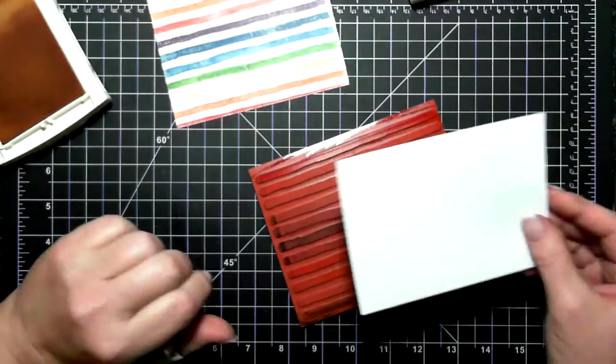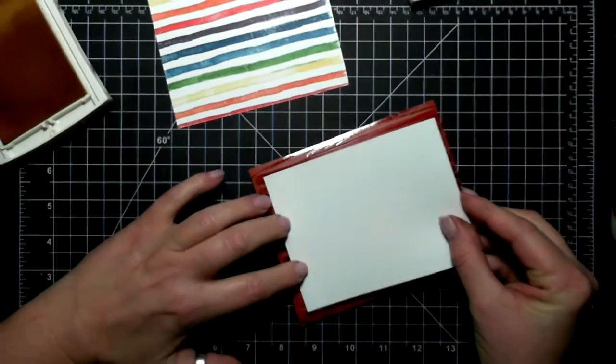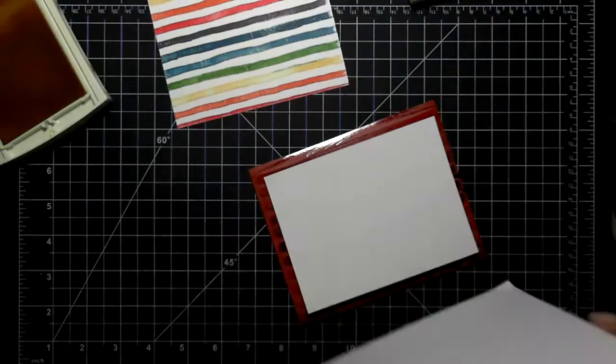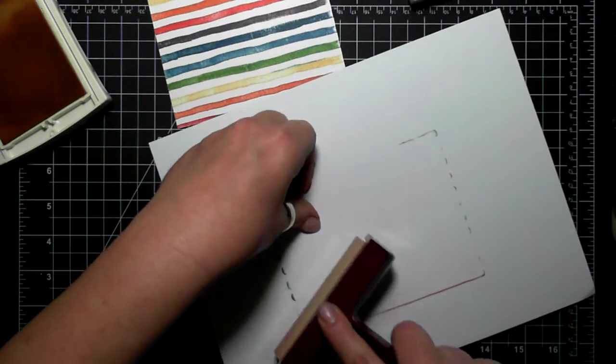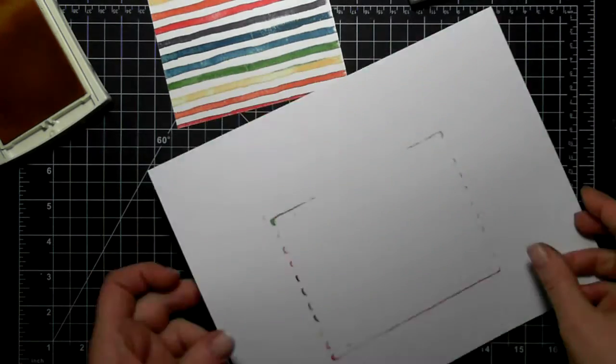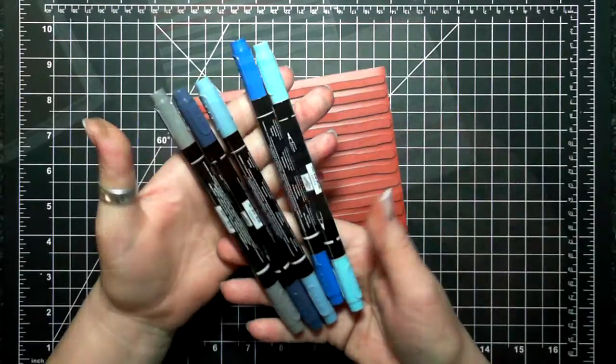Now what I'm doing is huffing on the stamp and I'm doing a second generation stamp. This will give a lighter impression of the ink, but there's still ink on there, so it does get just a little bit softer, as you can see.